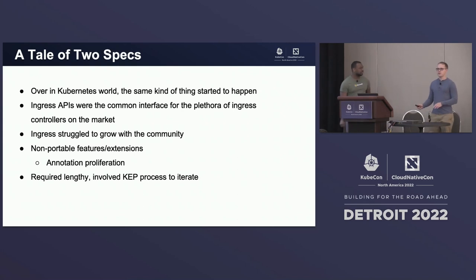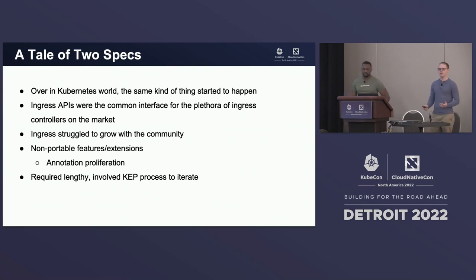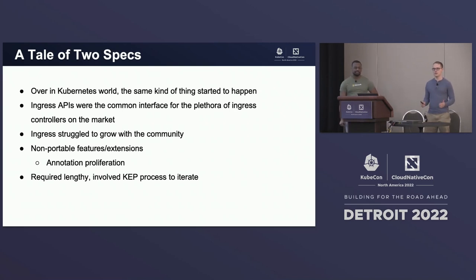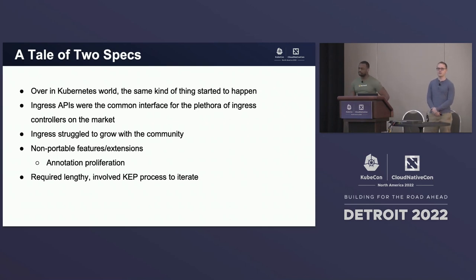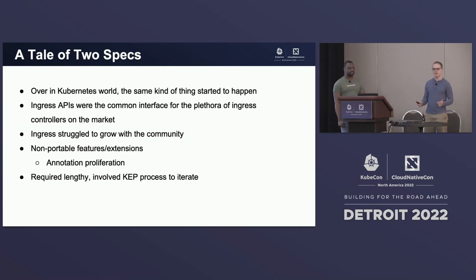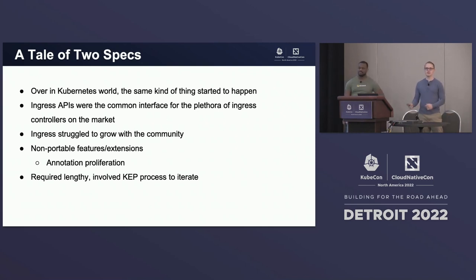If you look over into the ingress world of Kubernetes, we saw the same thing happening. From the beginning, Kubernetes had the ingress resource to describe how to get traffic into your cluster. They started with one unified API implemented by many different vendors, but the problem was it was so simple that it had a lowest common denominator feel to it, with no real extension points for adding vendor-specific things.